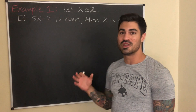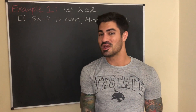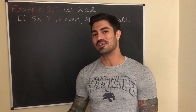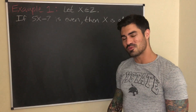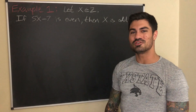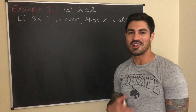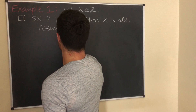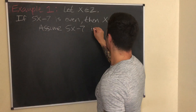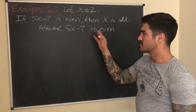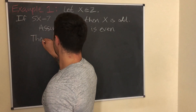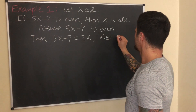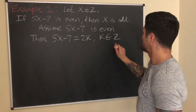You can always try direct proof first and see what happens — if it doesn't work, try something else. For the sake of this video, let's try direct proof and see where we hit a roadblock. For a direct proof, we assume the premise is true: assume 5x minus 7 is even. By definition, that means 5x minus 7 equals 2k where k is some integer.